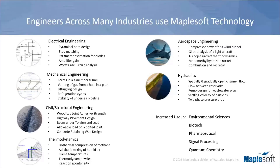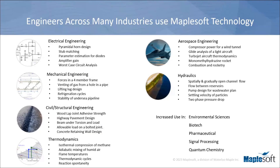Maple is being used across many different engineering disciplines. Here you have a list of a few of them to give you some idea and examples of the applications that are possible. You have the major branches of electrical and mechanical engineering; civil and structural are covered as well. You can see some examples here — for example, worst case circuit analysis, and we've had some webinars on that if you're curious and want to learn more. Concrete retaining wall design or stability of undersea pipeline, just to name a few.